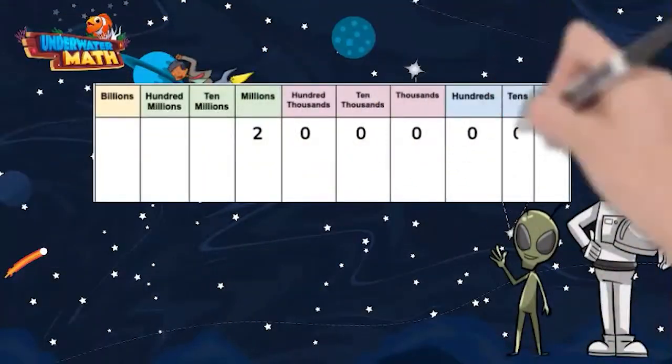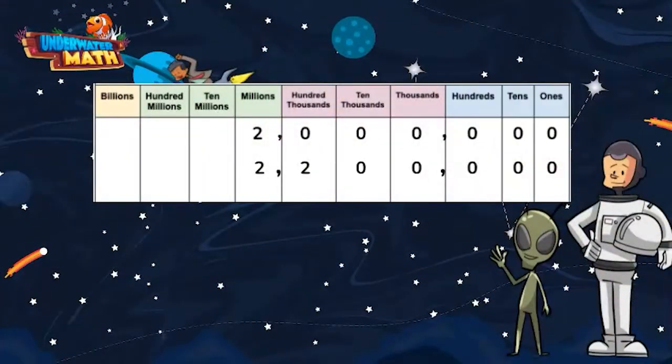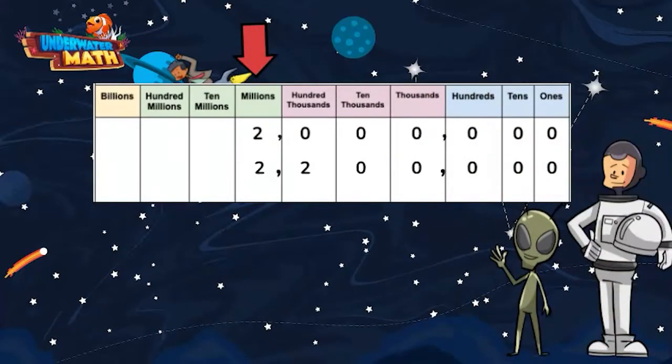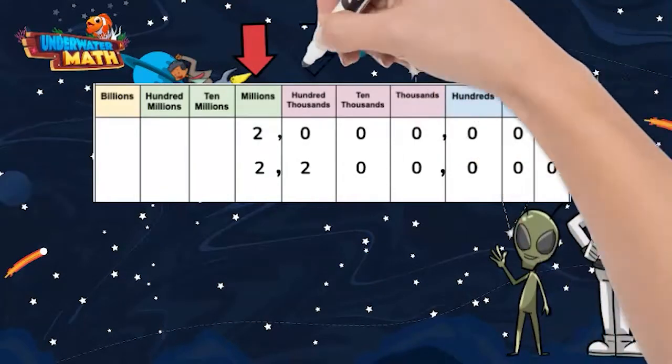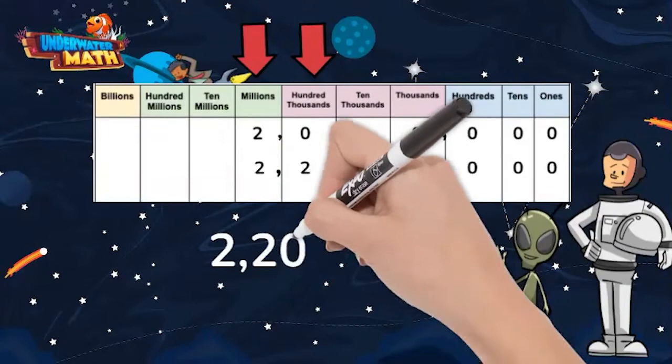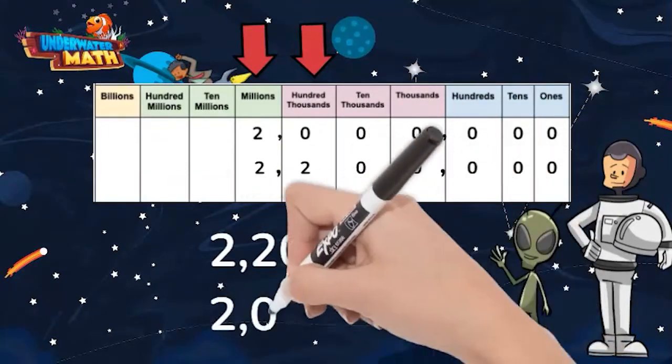But what if the numbers both start in the same place value? Great question. We can look at numbers from the place value furthest to the left and compare each digit as we move to the right. Here, both numbers have a digit in the millions place, 2. So far, the numbers are the same. Let's move over to the next place value. The top number has a 0 in this place value, but the bottom number has a 2. 2 is greater than 0, and the bottom number is larger than the top number. If we were to order these numbers from greatest to least, 2,200,000 would come before the number 2 million.